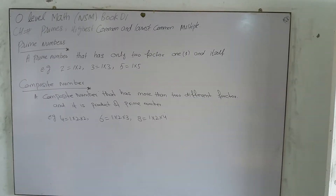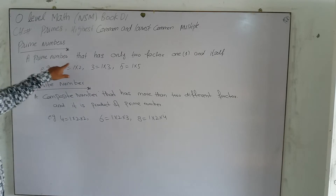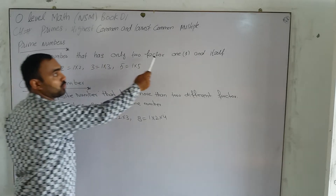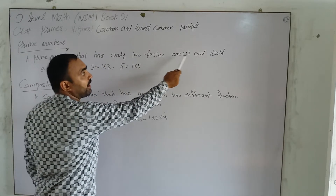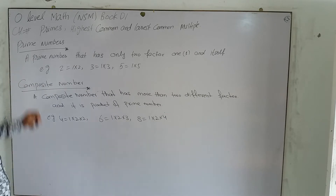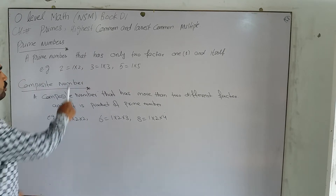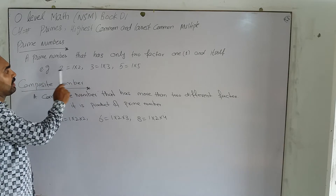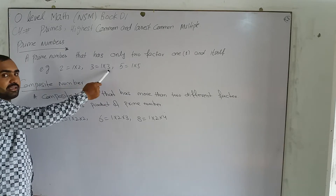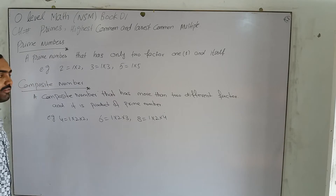Next is prime number. What is a prime number? A prime number is one that has only two factors: 1 and itself. For example, 2 has factors 1 and 2. Similarly, 3 has factors 1 and 3, and 5 has factors 1 and 5.